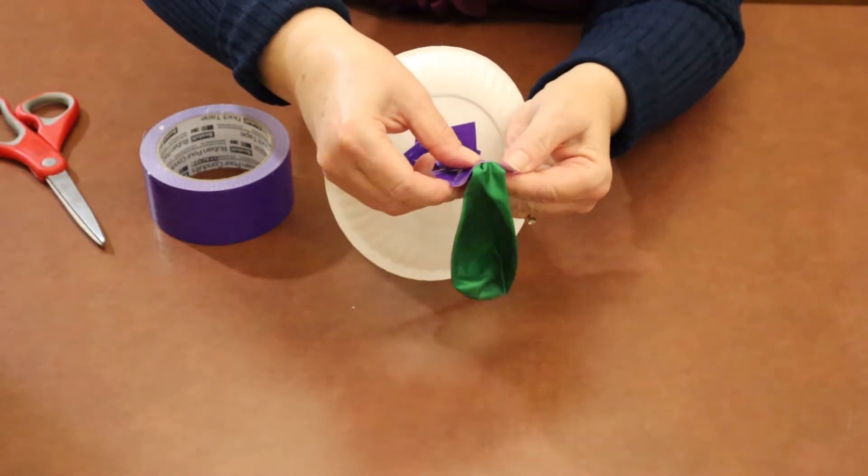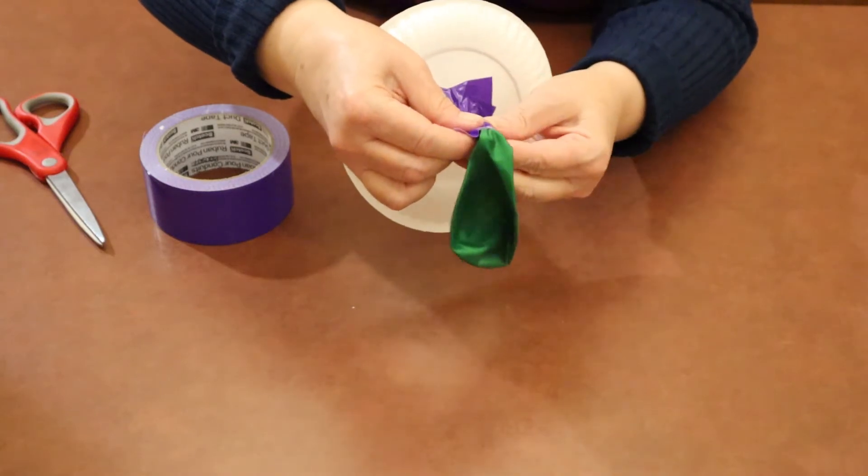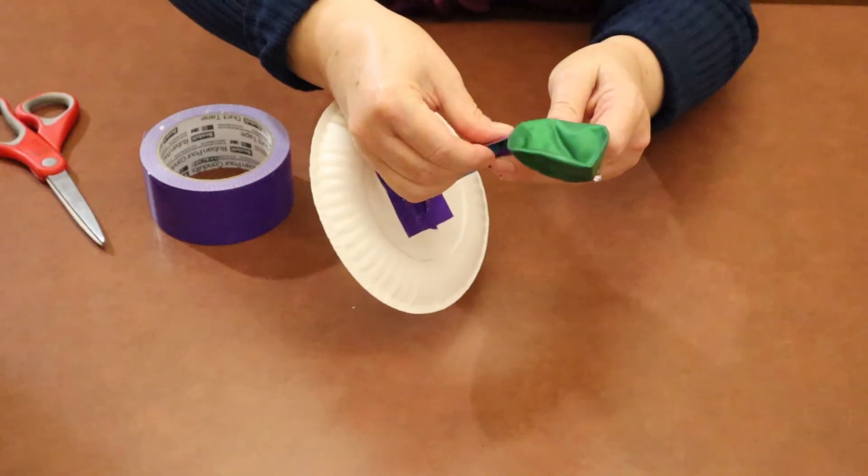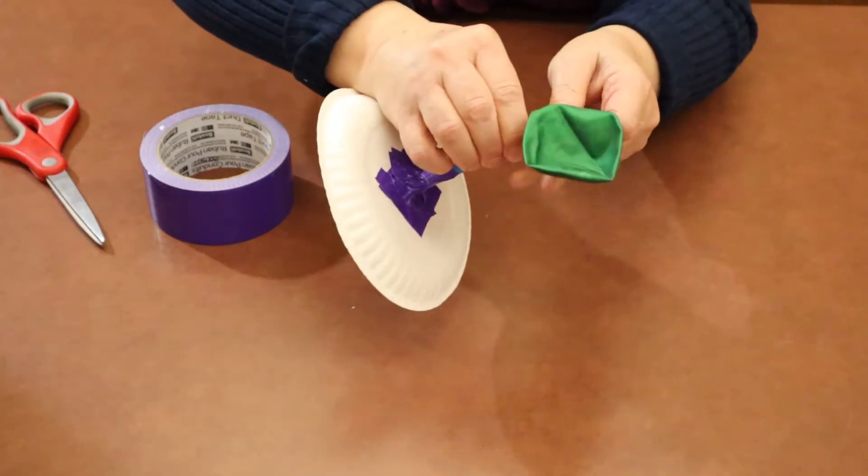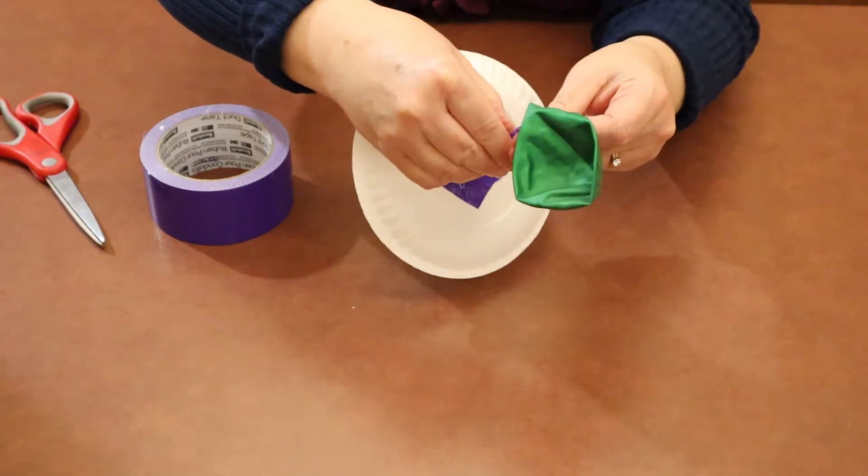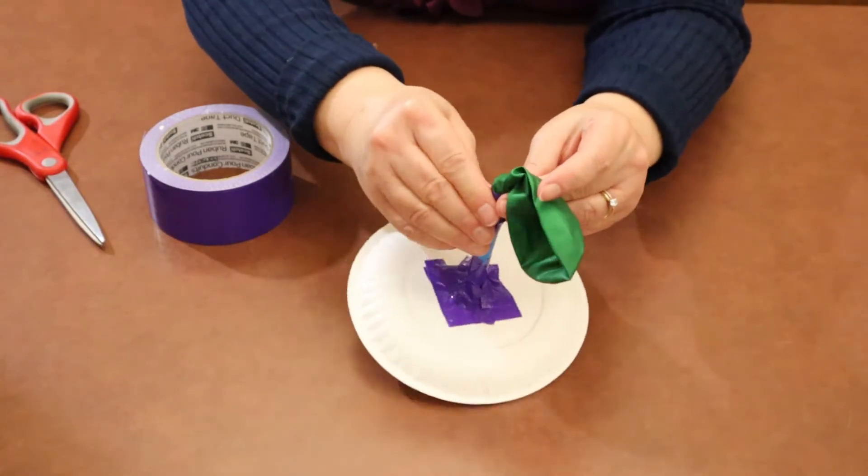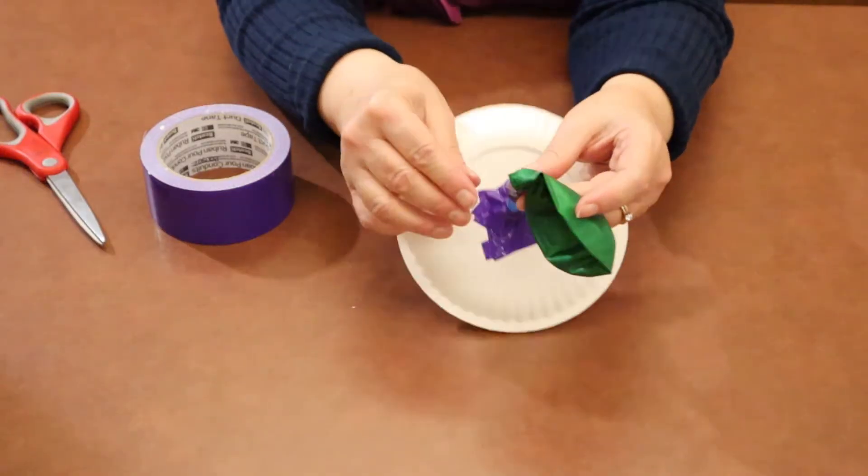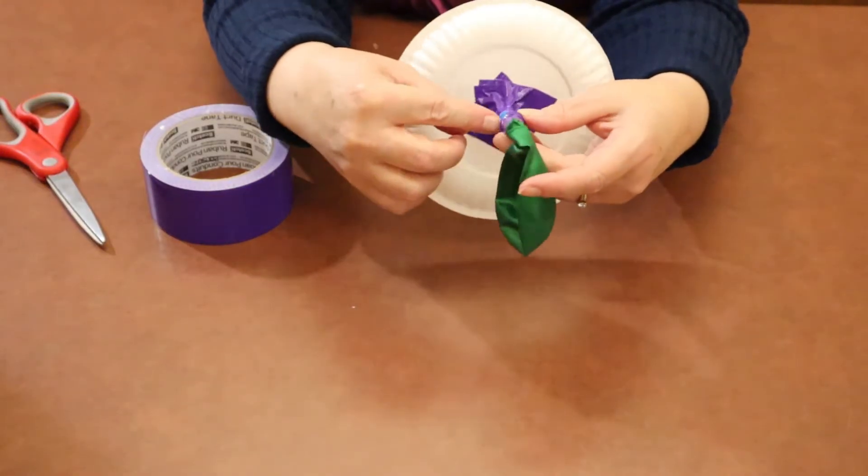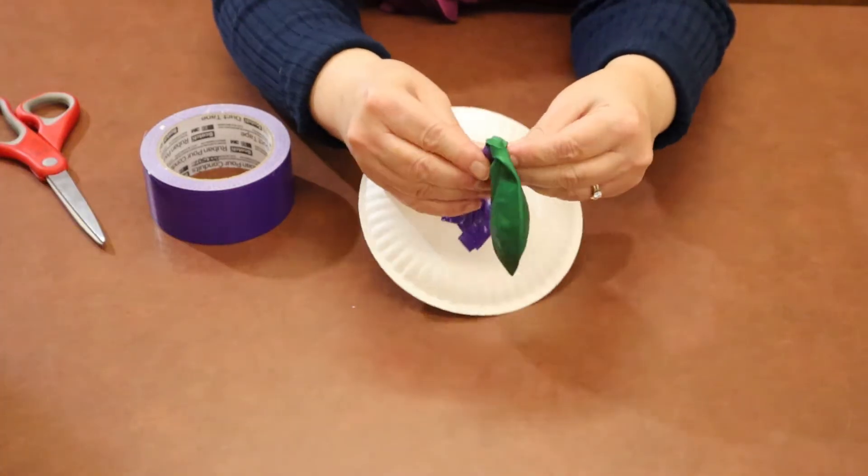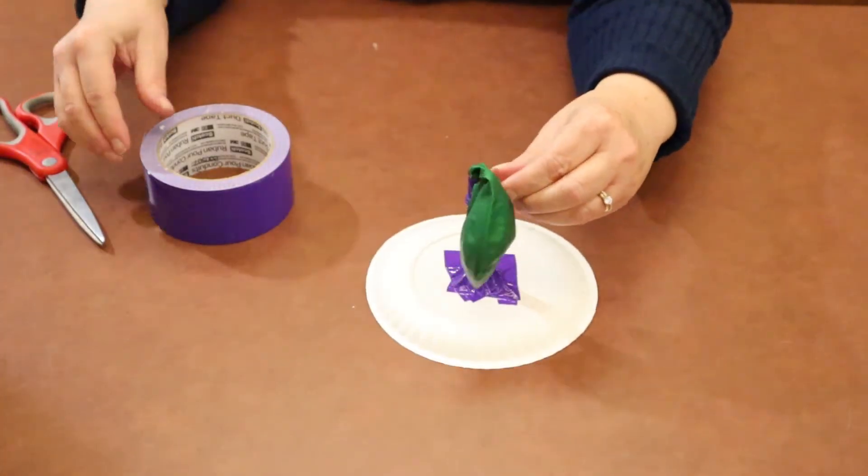Then duct tape it. You want to try to eliminate any air pockets or places the air will escape when you're doing this, because the air is the important part of our project. Do that as tight as you can, and if you feel like you can put another piece of duct tape down here, you can even take another small piece and tighten it up.